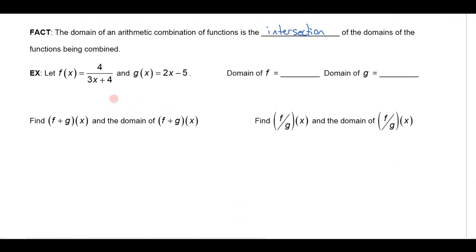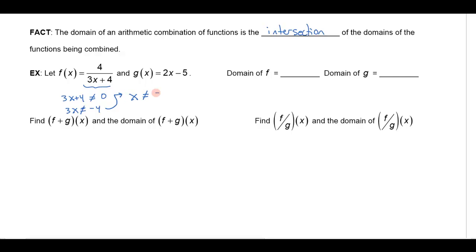Let's do one more example. Suppose I have a function f of x equal to 4 over 3x plus 4, and g of x equal to 2x minus 5. The domain of f — the only thing that could go wrong is dividing by 0. So I don't want 3x plus 4 to equal 0. That means 3x cannot equal negative 4, and x cannot equal negative 4 thirds. So the domain of f is the set of x such that x does not equal negative 4 thirds. And for the function g, notice there's no division by 0 and no square roots, so that domain is just all real numbers.